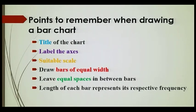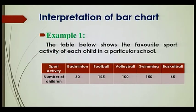Now that we have learned how to construct a bar chart, we are going to move to the next part — interpretation of bar charts. We look at an example. The table below shows the favorite sport activity of each child in a particular school.